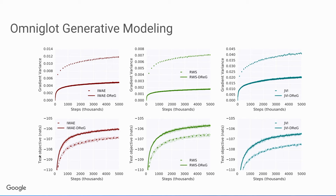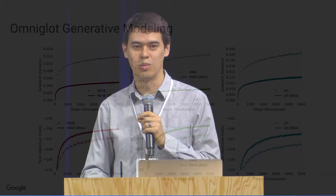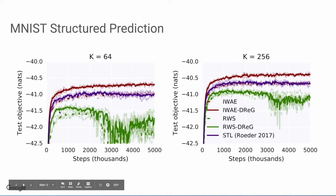We also applied this to the structured prediction task — given the top half of an MNIST digit, modeling the distribution of potential bottom halves. We see improvements using the doubly reparameterized gradient estimator across different sample sizes and different estimators. The unbiased IWAE doubly reparameterized gradient estimator gives the best performance across all training techniques.